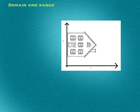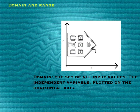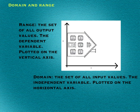Okay, let's move on to domain and range. We need to define these two things. Domain would be the set of all input values, or the independent variable — basically your x's, but it's not always x, it depends on what your problem is dealing with. That's always plotted on the horizontal axis. And the range is the set of all output values, or the dependent variable, and that's always plotted on the vertical axis.